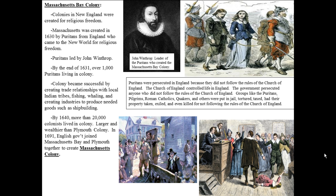The Puritans, led by John Winthrop, came to the Massachusetts Bay area in 1630, and by the end of 1631 there were over a thousand Puritans living in the colony. The Massachusetts Bay area is near Plymouth — it's all around the arm of Massachusetts. When you look at Massachusetts, it looks like an arm flexing its muscle, and the Massachusetts Bay Colony was all over that area.